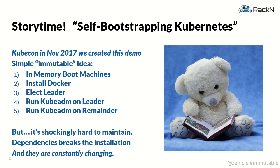This presentation comes out of a goal we had for KubeCon in November of 2017 in Austin, which was to be able to wheel out a rack, turn it on, and have Kubernetes magically appear — a completely self-bootstrapping cluster. This was something we discussed with Kelsey Hightower. It didn't turn out to be the keynote he chose, but we actually built all the technology to do it. You can boot machines with in-memory operating systems, install Docker, elect a leader, use kubeadm — the community installer — to install on that leader and then pass tokens around.